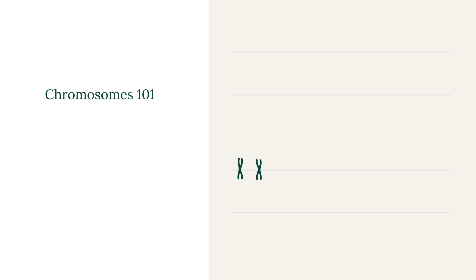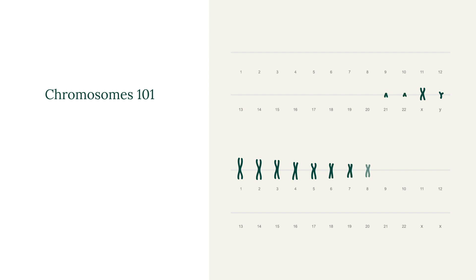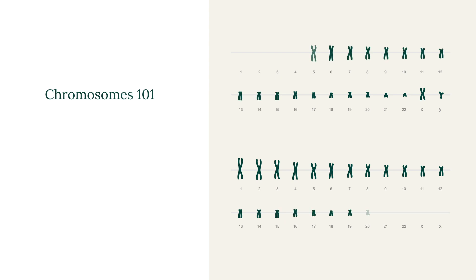To understand how CCS works, it's helpful to learn about chromosomes and their role in human fetal development. Chromosomes are the microstructures in human cells that consist of DNA. The DNA sequences which make up each of our chromosomes contain thousands of genes, and these genes are the blueprints for every organ and tissue, as well as our individual characteristics.